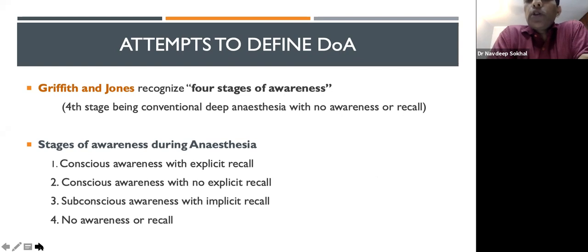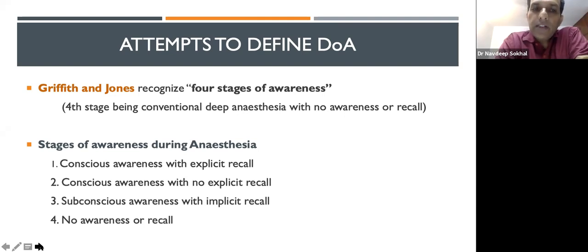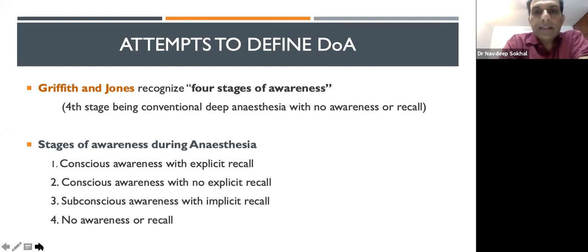Griffith and John recognized four stages of awareness during anesthesia: conscious awareness with explicit recall; consciousness awareness with no explicit recall; subconscious awareness with implicit recall; and finally no awareness or recall — equivalent to deep anesthesia.